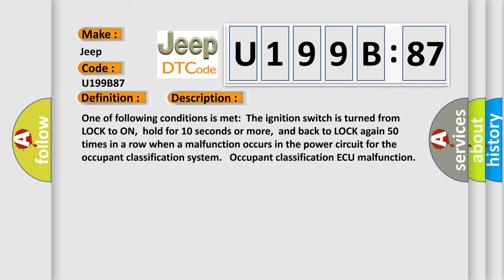One of the following conditions is met: the ignition switch is turned from lock to on, held for 10 seconds or more, and back to lock again 50 times in a row when a malfunction occurs in the power circuit for the occupant classification system. Occupant classification ECU malfunction.